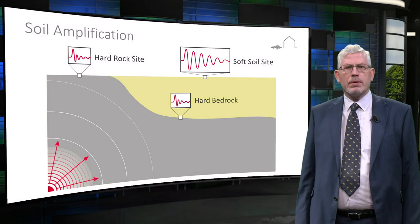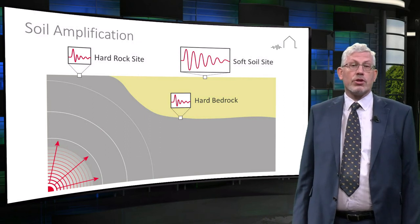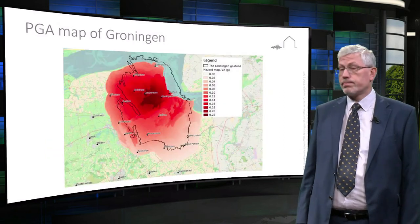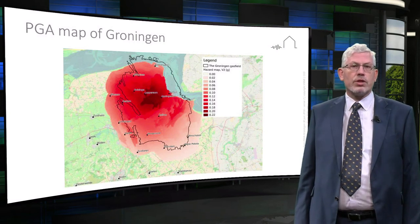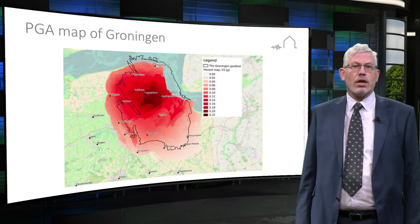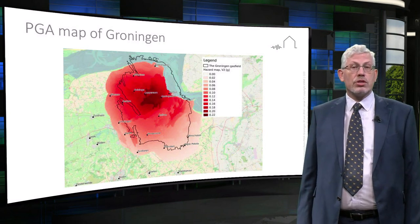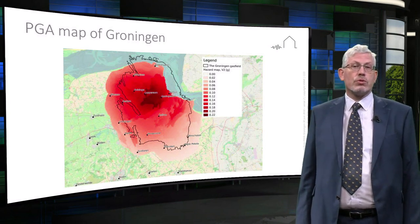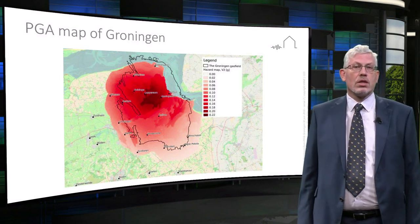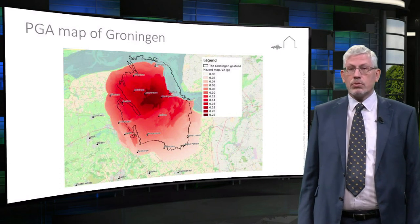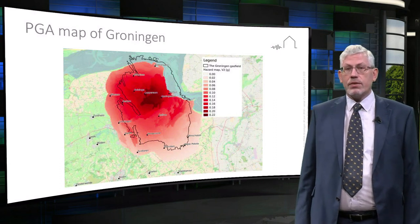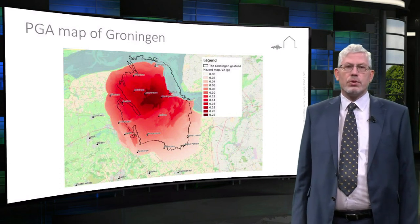A seismic hazard map has been derived for the Groningen region. This accounts for our understanding of the geological structure within the reservoir and the compaction rate. It also considers the soft soil deposits. This can be used directly in the assessment of existing buildings and the design of new buildings.